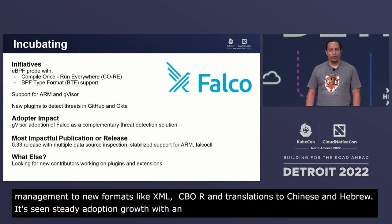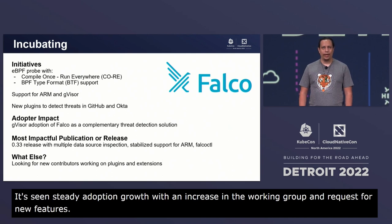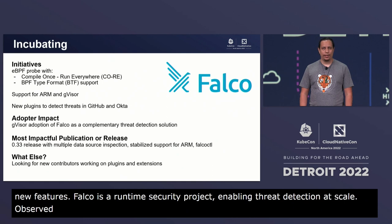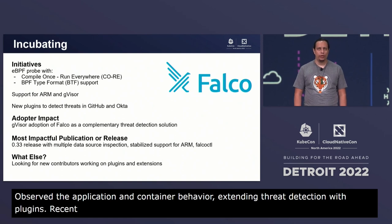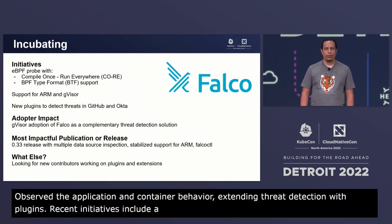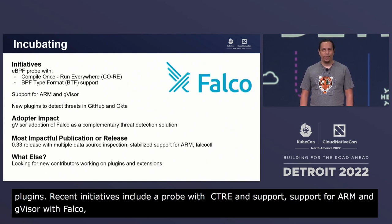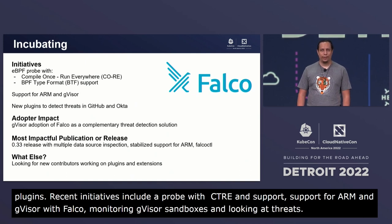Falco is a runtime security project enabling threat detection at scale — it observes application and container behavior, extending threat detection with plugins. Recent project initiatives include a new eBPF probe with CO-RE and BTF support, support for Arm and gVisor with Falco being able to monitor gVisor sandboxes, and new plugins to detect security threats in GitHub and Okta activity. gVisor has adopted Falco as a complementary solution for threat detection in their security project.